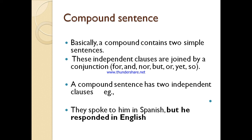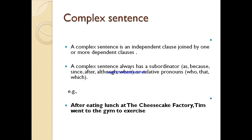So we have two simple sentences joined by the conjunction 'but,' and each expresses one complete thought — that is a compound sentence. The third type is the complex sentence. It is an independent clause joined by one or more dependent clauses. In complex sentences we have one independent clause and one or more dependent clauses, joined by a subordinating conjunction,